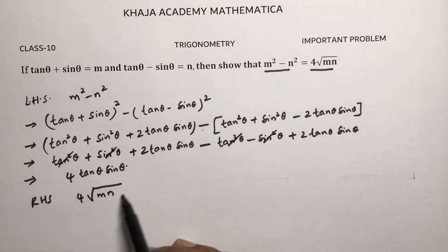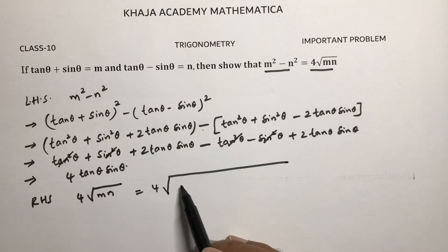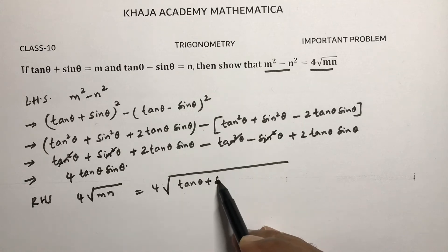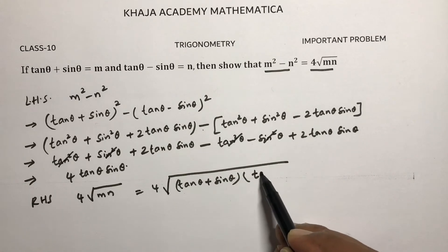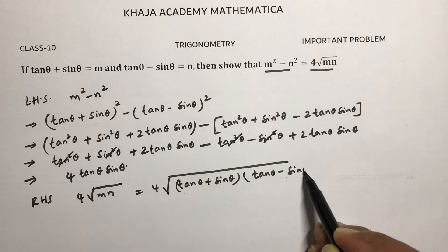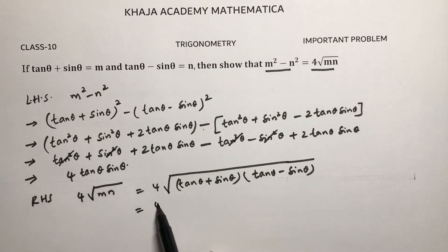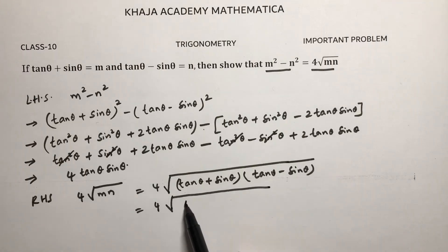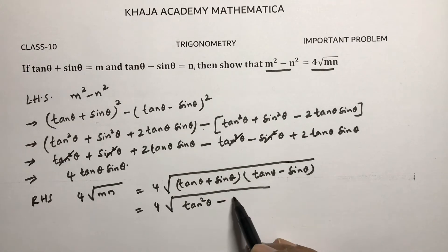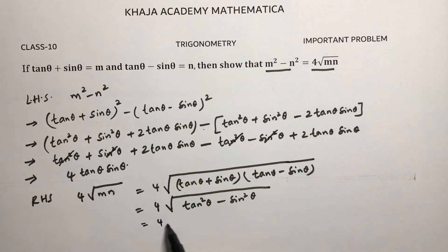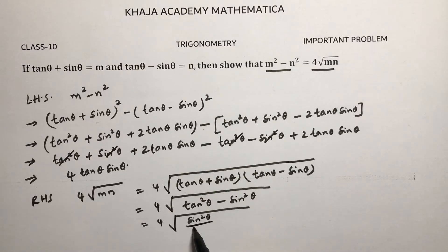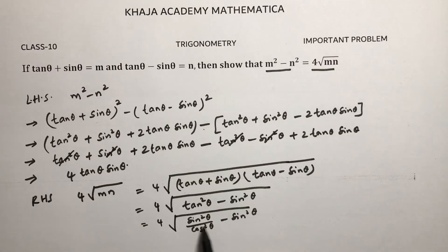For RHS: 4 under root of m times n, where m is tan θ plus sin θ and n is tan θ minus sin θ. This is in the form of (a + b)(a - b), giving tan squared θ minus sin squared θ. We can write tan squared θ as sin squared θ divided by cos squared θ, minus sin squared θ.